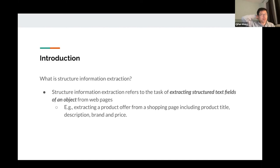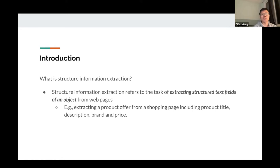What is Structure Information Extraction? It refers to the task of extracting structured text fields or text information of an object of interest from web pages. For example, an object could be a product offer. We want to extract a product offer from a shopping page, including all the information about it — such as product title, offer price, product brand, description, etc.